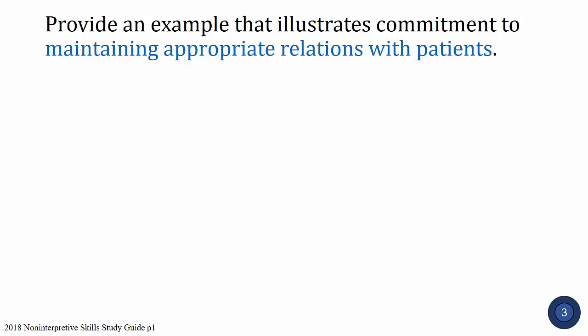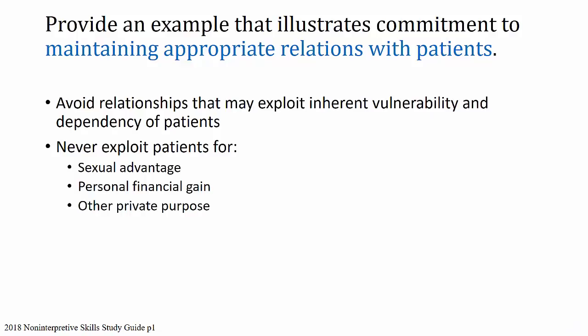Commitment to maintaining appropriate relations with patients means avoiding relationships that exploit the inherent vulnerability and dependency of patients. We must never exploit patients for sexual advantage, personal financial gain, or other private purpose. Examples include dating a patient, having inappropriate relations, or expecting financial benefit because you're their doctor. Violating this commitment is a reliable way to lose your medical license.